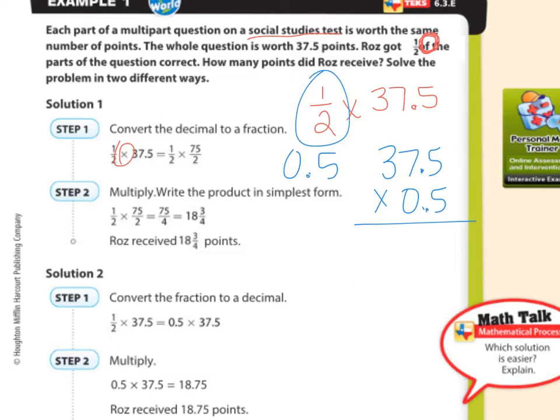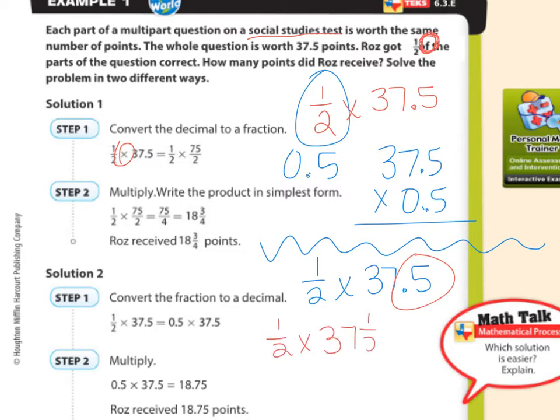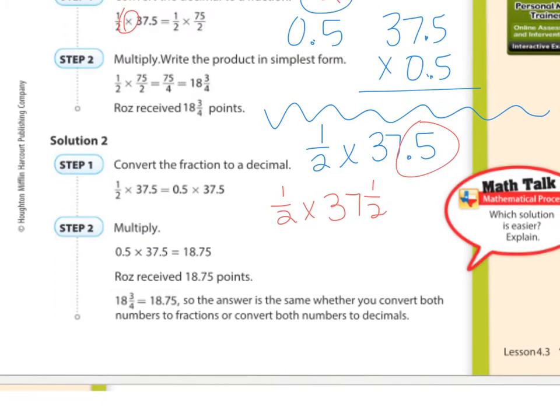And then, if you want to do it as a fraction, one half of 37 and a half. We would just change this decimal to a fraction. 37.5 is 37 and a half. Remember, this is a half. So we write one half times 37 and a half. And then you have this problem. What do we need to do? We need to get mad. So it's going to be one half times—I'm going to take two times 37, which is going to be 74 plus one is 75 halves. So 75 halves. And that gives me 75 fourths.